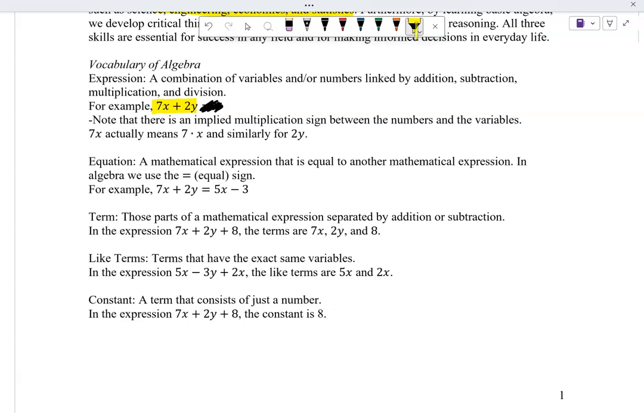An equation, on the other hand, has an equal sign. So the one down below there, 7x plus 2y equals. We've got an equation. Again, the terms would be 7x is a term, 2y is a term, 5x is a term, and that minus 3 is a term. I've got four terms there. So in this expression right there, how many terms do we have? 7x plus 2y plus 8? Three terms, exactly.